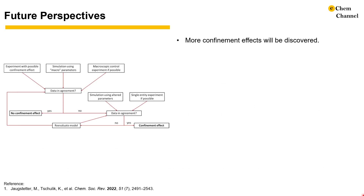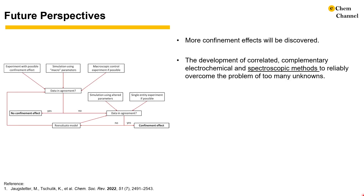As the discipline of electrochemistry under confinement is just coming into shape, the authors expect the discovery of more confinement effects. The distinction between the confinement effect and other effects like the nano effect will be important to verify both experimentally and theoretically, as the authors suggested in the flowchart on the left. Due to the complexity of real systems, it comes with many unknowns, which makes the distinction difficult. The authors expect the development of correlated and complementary electrochemical and spectroscopic methods to reliably overcome the problem of too many unknowns.